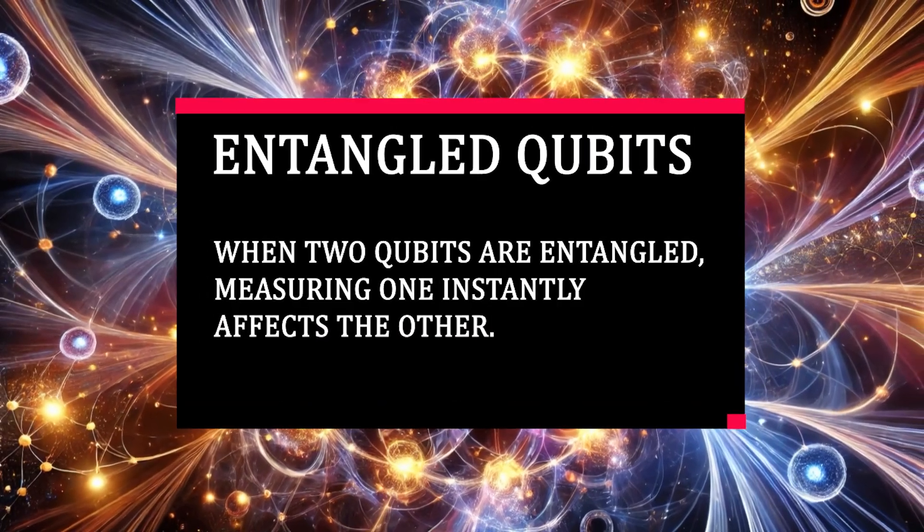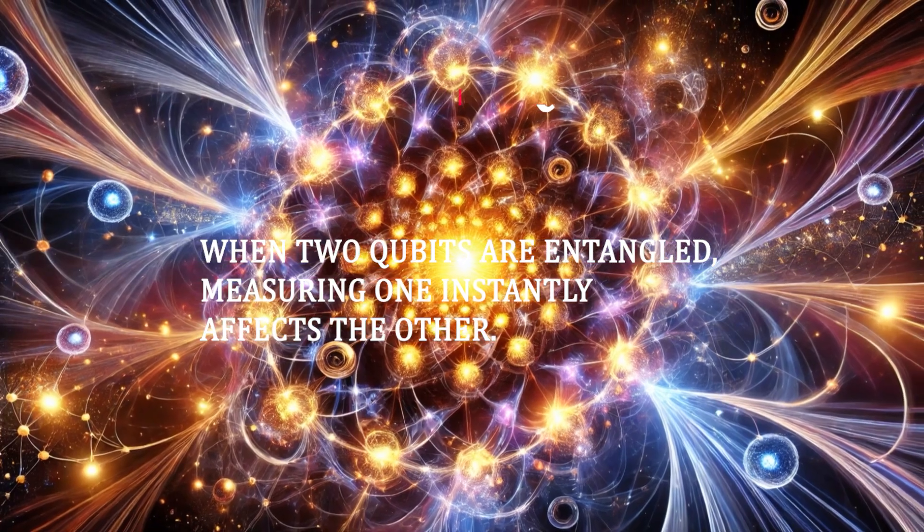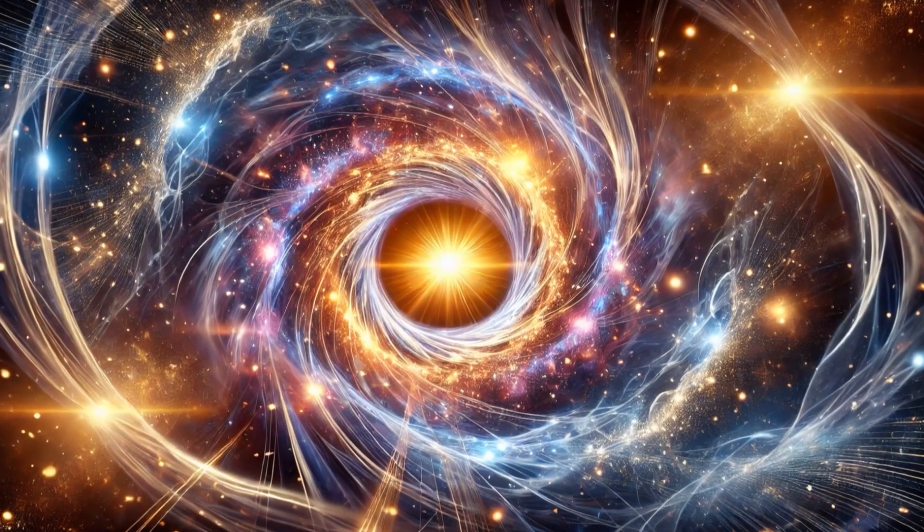Two or more qubits can also be entangled, meaning measuring one qubit affects the others instantly regardless of physical distance. This spooky action at a distance, as Einstein called it, is one of the most fascinating aspects of quantum mechanics.